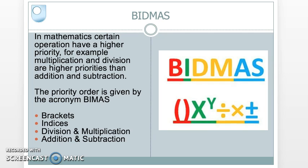In mathematics, certain mathematical operators have a higher priority. For instance, multiplication and division have a higher priority in the calculation than addition and subtraction. And there's a simple acronym which will help us remember this. It's called BIDMAS. You might have learnt something similar at school, BIDMAS or BOMDAS. It stands for brackets, indices, division and multiplication, addition and subtraction. So therefore, this gives us an order in which our calculations will be performed.